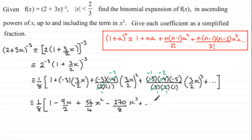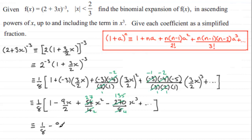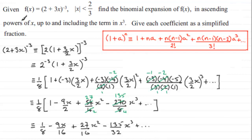We can simplify further: divide 54/4 by 2 to get 27/2, and 270/8 by 2 to get 135/4. Expanding everything with the factor of 1/8, the final result is: f(x) = 1/8 − 9x/16 + 27x²/16 − 135x³/32 + ... We've expanded in ascending powers of x up to and including the term in x³.